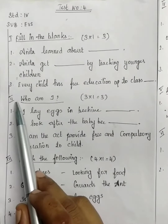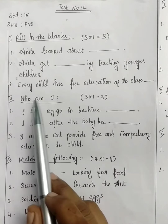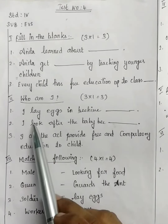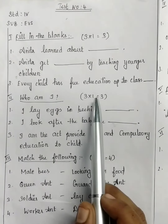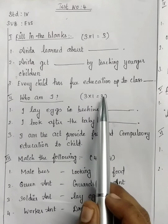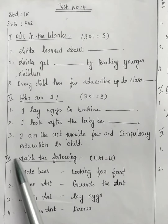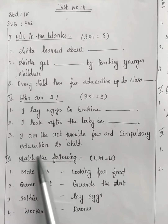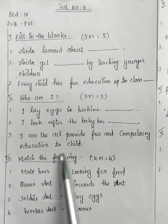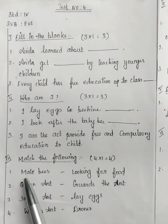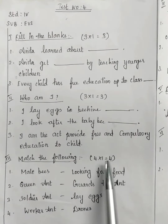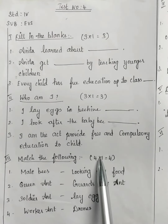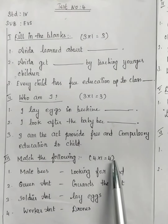In the second Roman letter, Who am I? There are 3 questions. Each question carries 1 mark, totally 3 marks. In the third Roman letter, match the following. In match the following, there are 4 questions. Each question carries 1 mark, totally 4 marks.